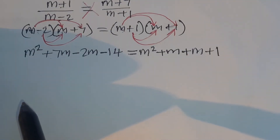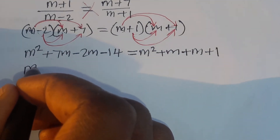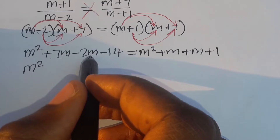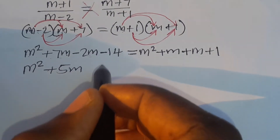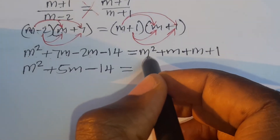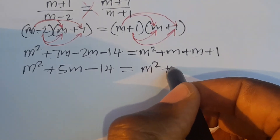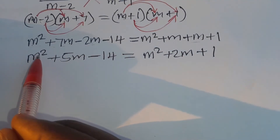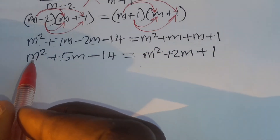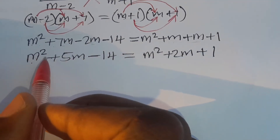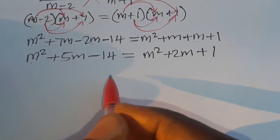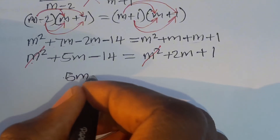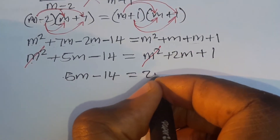Now let's simplify on both sides of the equal sign. On the left we have m squared, then 7m minus 2m is 5m, then minus 14. On the right we have m squared plus 2m plus 1. Since m squared appears on both sides, they cancel out, leaving 5m minus 14 equals 2m plus 1.